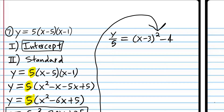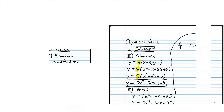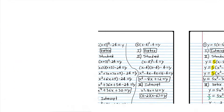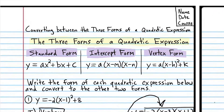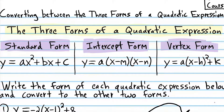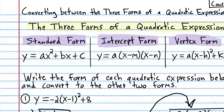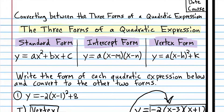We need to isolate y because in vertex form — in all these forms — y is isolated. You can see y is by itself in vertex form. But here, the 5 is under y. We had to put all that stuff next to y to get it out of the way. Now we just have to multiply both sides by 5 to get y by itself.